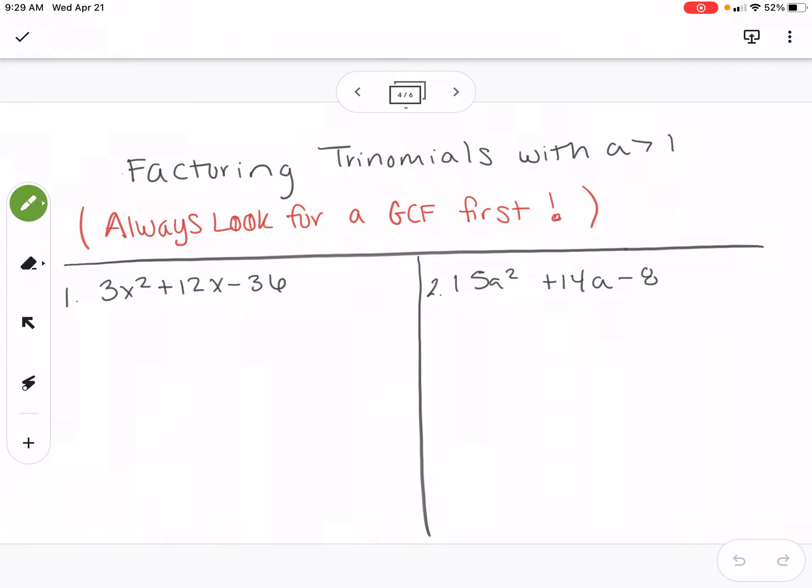So if you look at problem one, this one, if you notice, does have a greatest factor. All of these are divisible by three. So I can actually factor out a three at the beginning of the problem. So then I'm going to get x squared plus 4x minus 12. So that three is removed.